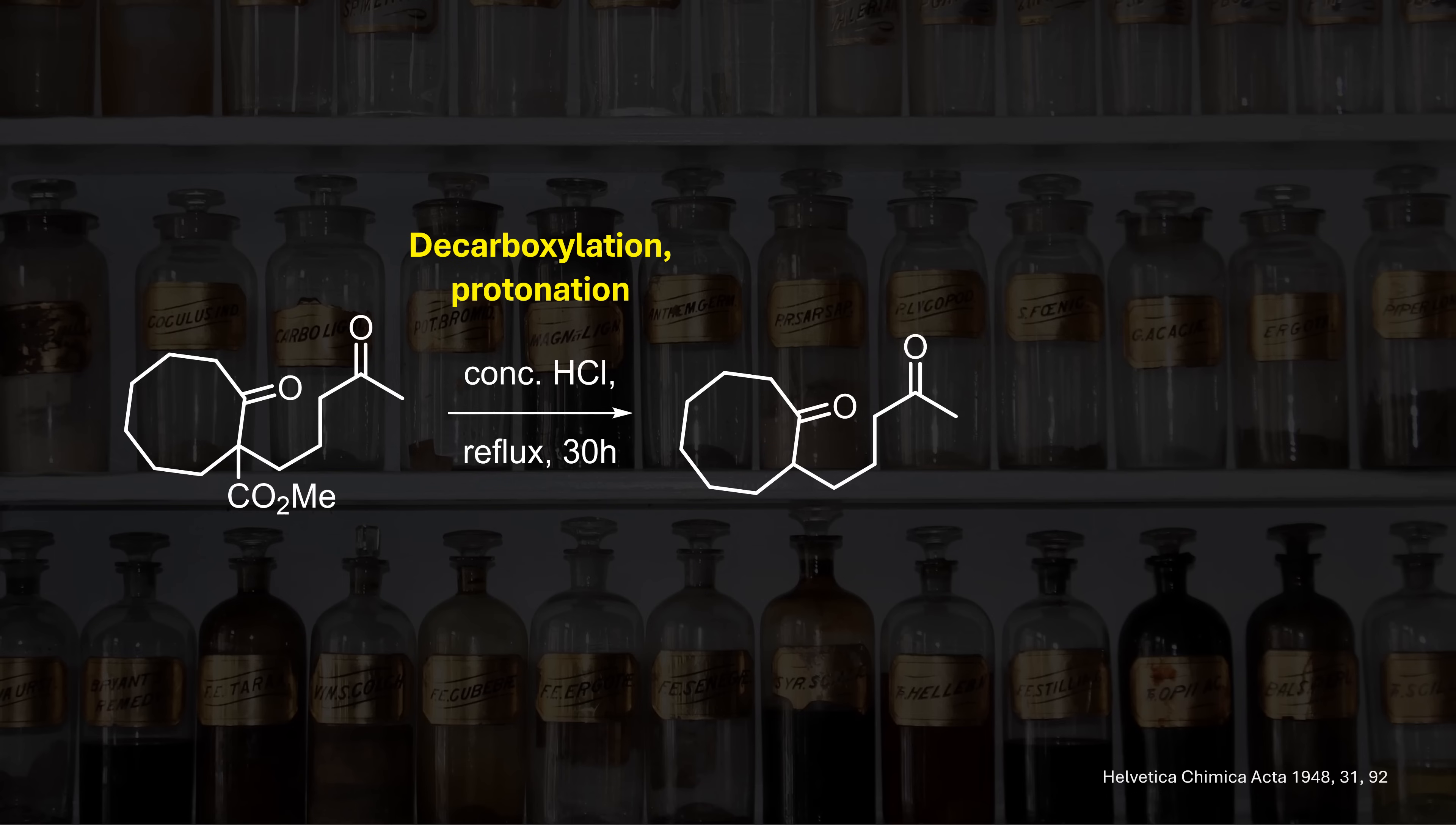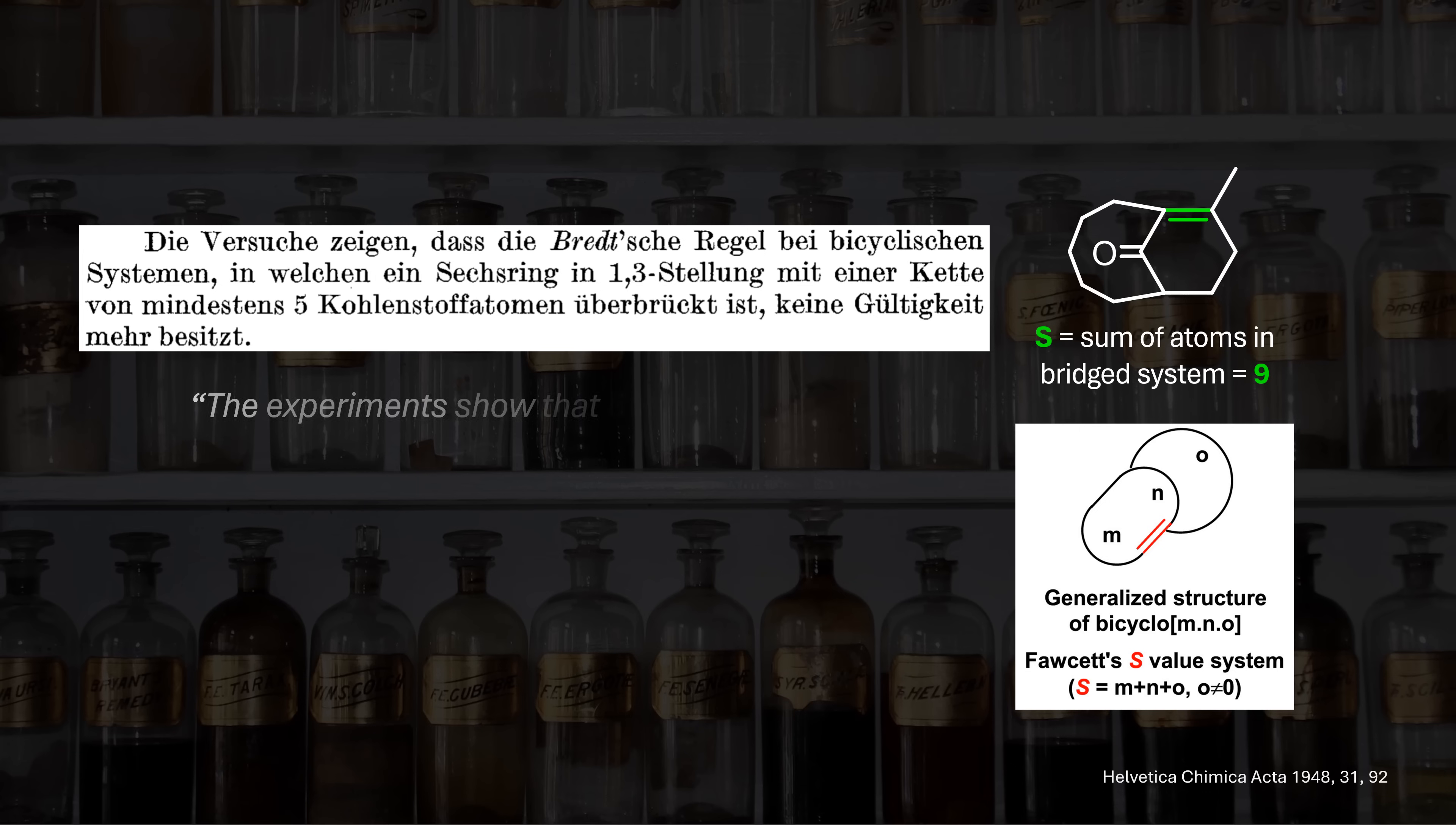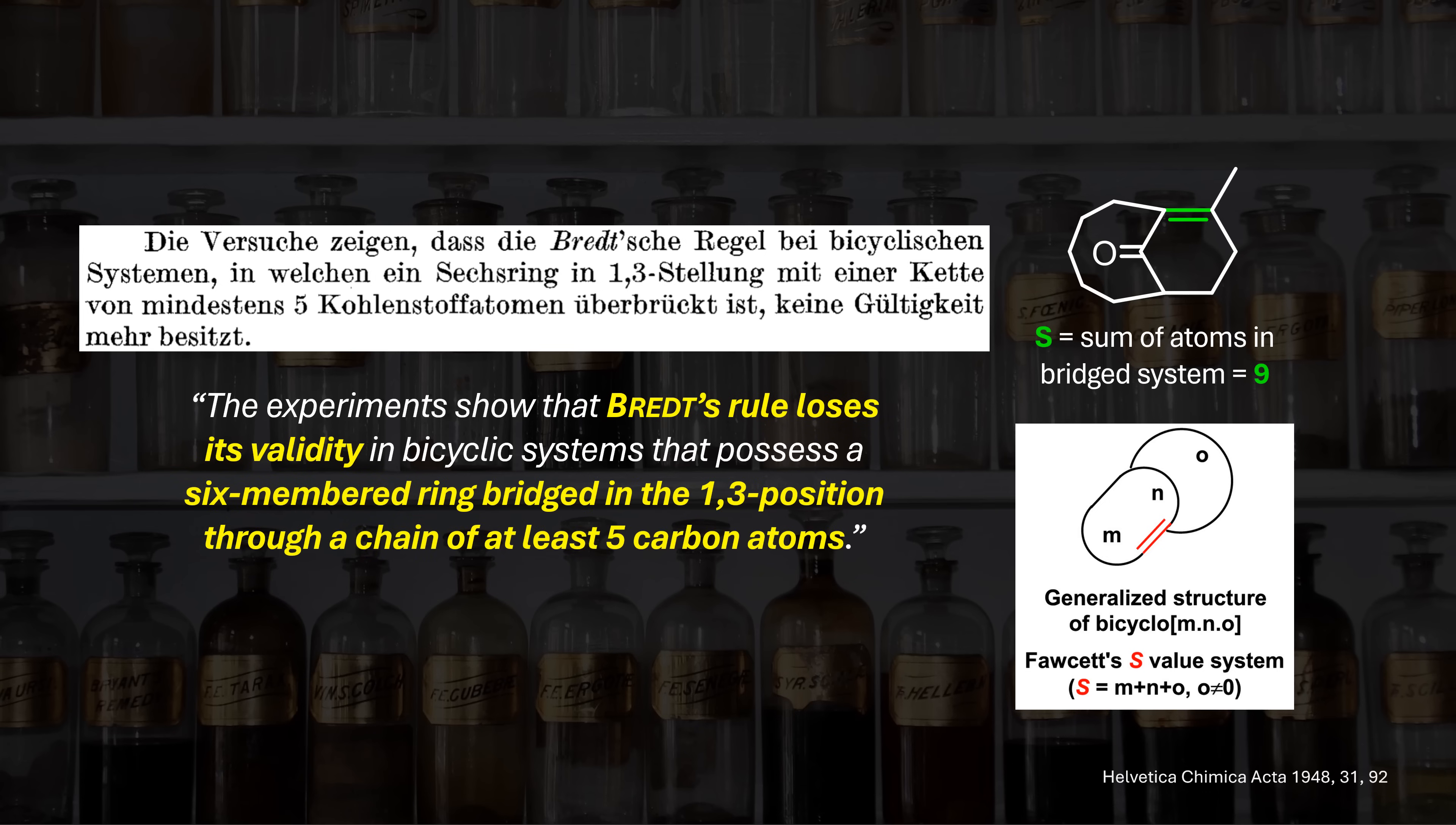As you might expect, condensation driven by the most accessible enolizable site gives a normal bicyclic product. But this was only a minor product. The major one actually comes from enolization at the alpha position of the other ketone. If you aren't asleep, you will notice that this is a bridgehead olefin. This means we kinda broke Bredt's rule already more than 70 years ago. The system at hand has a S-value of 9, just like the molecule we had seen previously. The larger ring size reduces the olefin strain, which is why we can even isolate it.